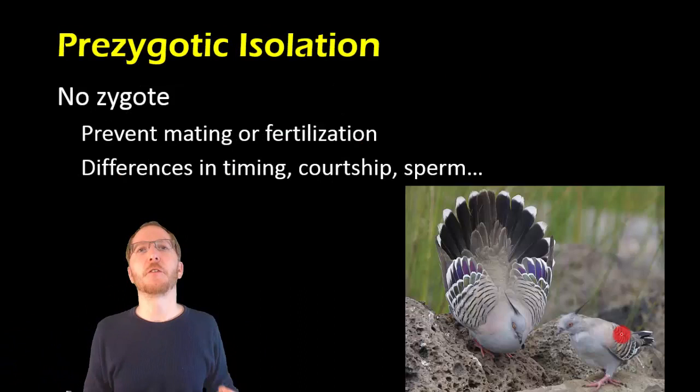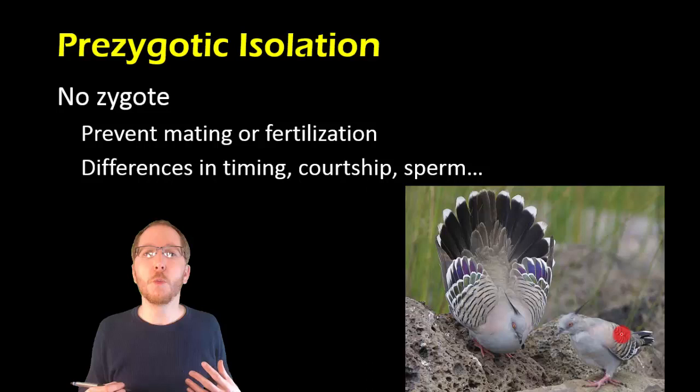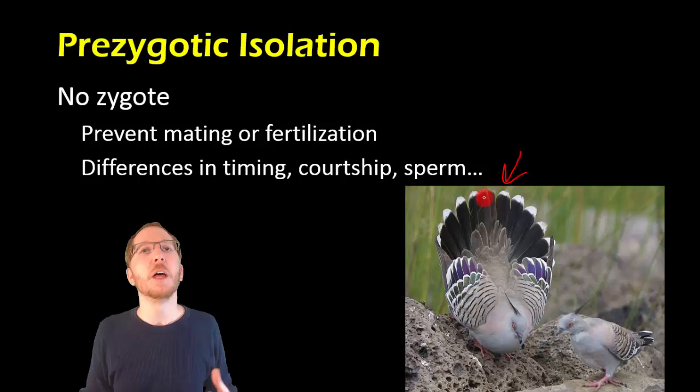The first is prezygotic. Prezygotic is going to be something that makes it where you just do not mate successfully with the organism, so there's no pregnancy. This could be something that's simple where there's a dance or some type of behavior or song that's required to get the female to mate with you. And so if you have a different dance or if you have a different mating call, then ultimately the female is going to ignore you.